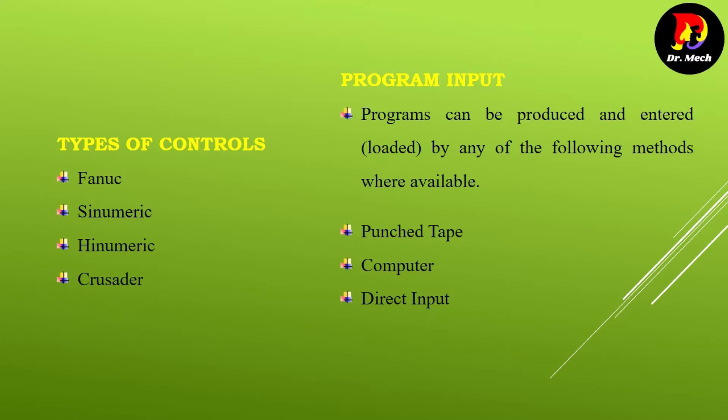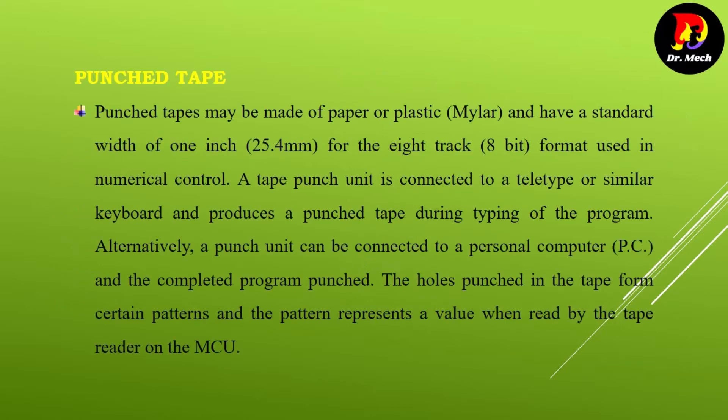Punch tapes may be made of paper or plastic material such as Mylar, and have a standard width of 1 inch (25.4 millimeters) for the 8-track, 8-bit format used in numerical control. A tape punch unit is connected to a teletype or similar keyboard and produces a punch tape during typing of the program.